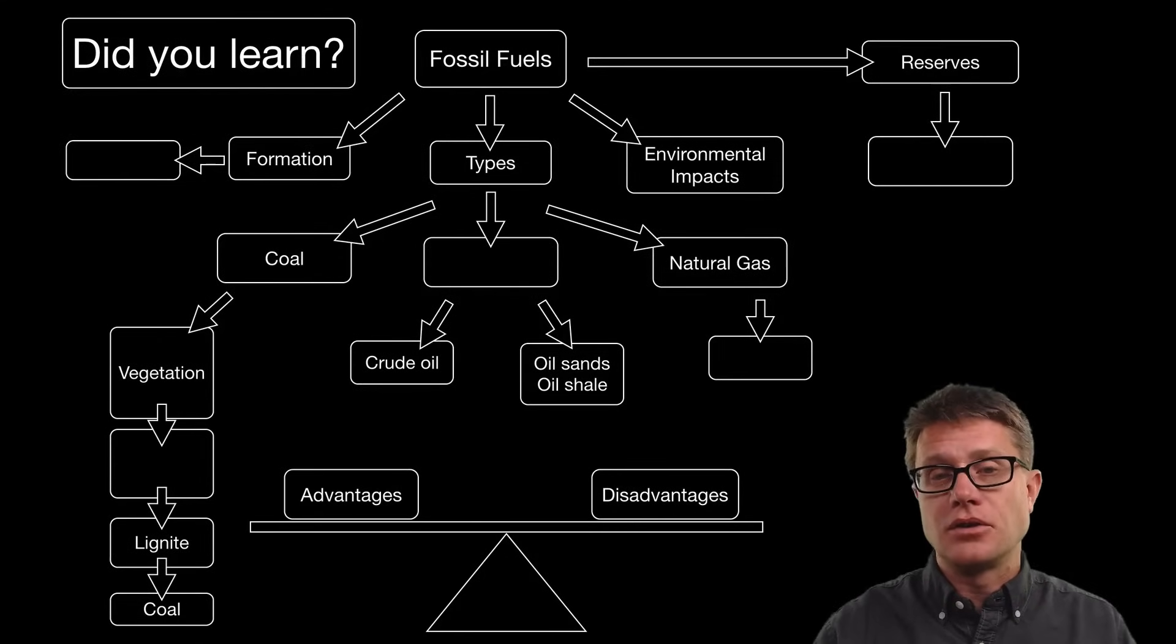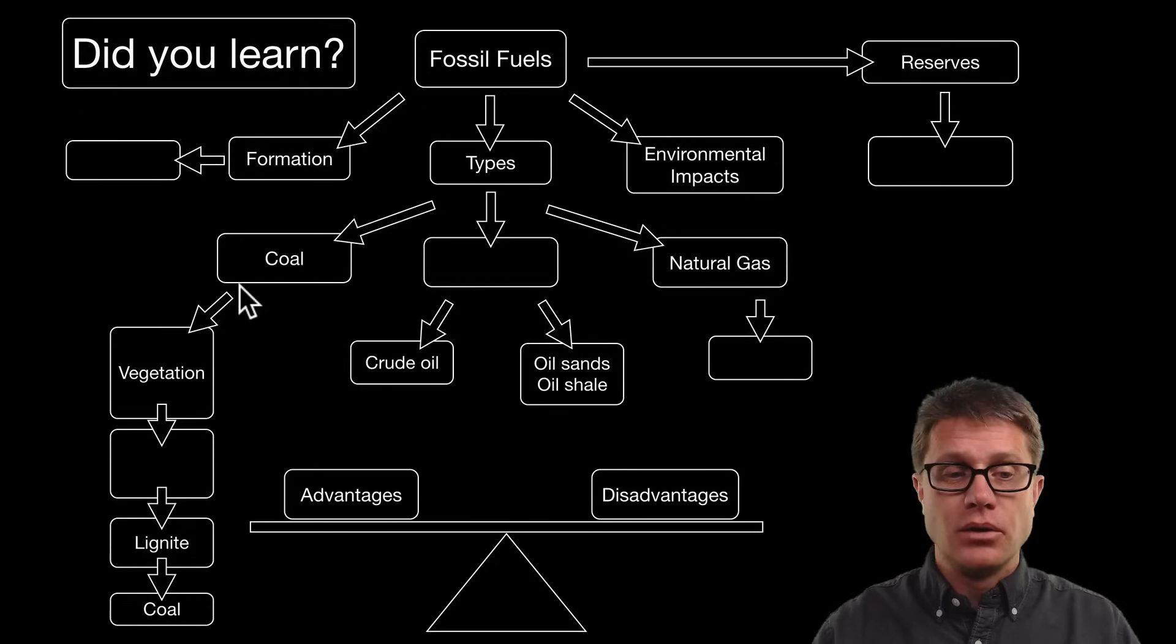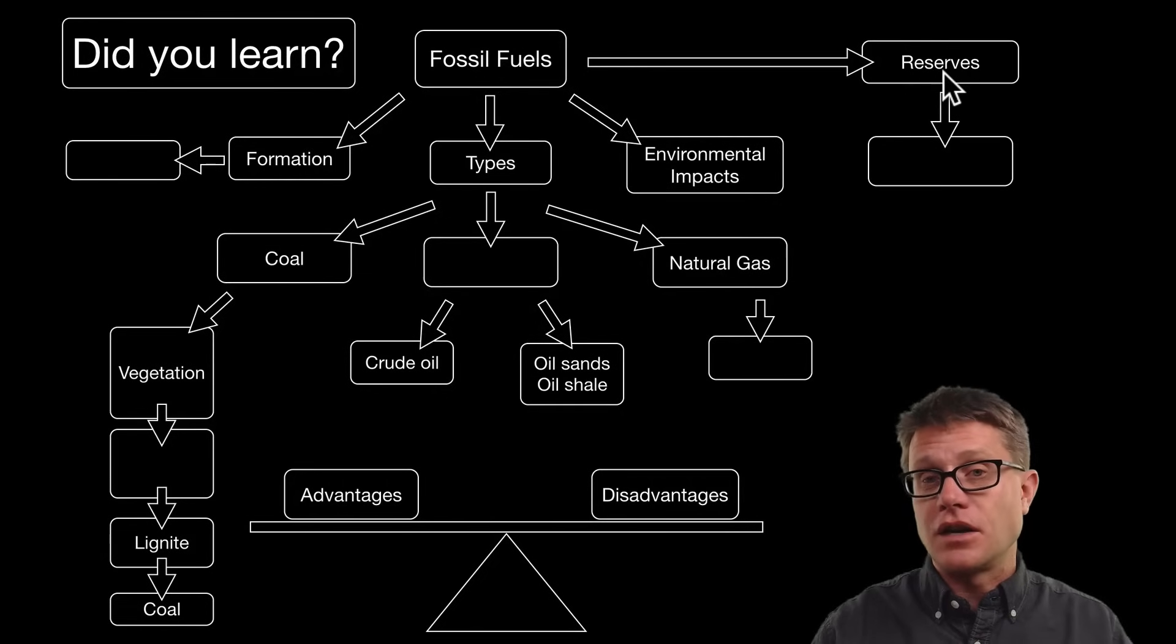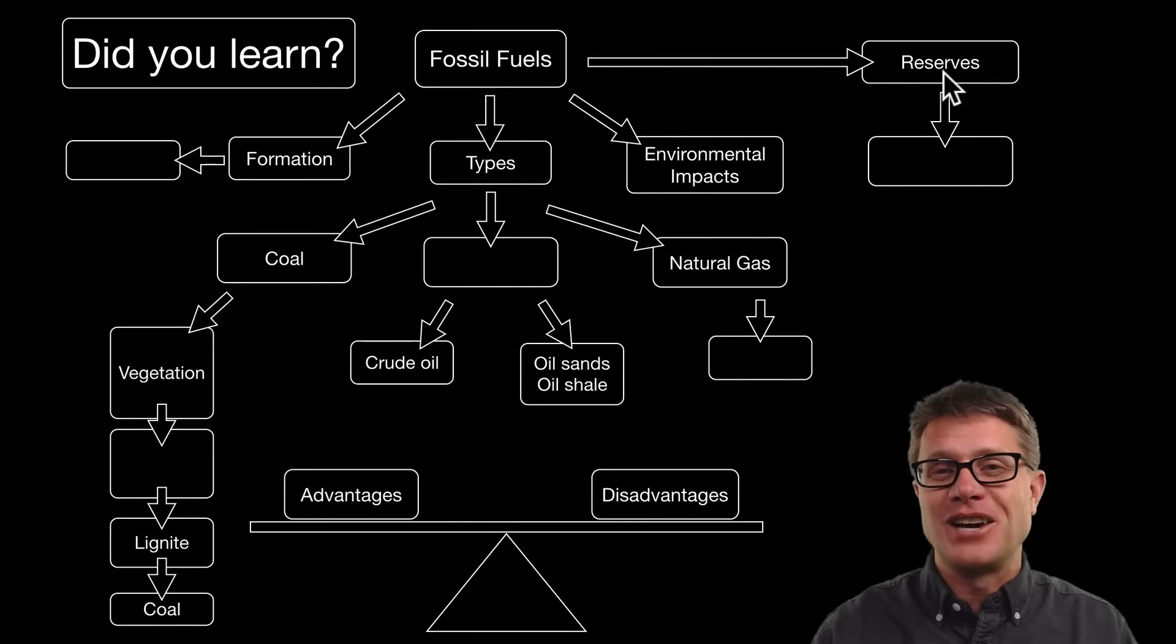And so did you learn the following? Could you pause the video at this point and fill in the blanks? I will do it for you. Fossil fuels are formed in an anaerobic environment. Coal is formed where we have vegetation squeezed to make peat, then lignite, then coal. Petroleum can come in the form of crude oil or oil sands and oil shales. If we are looking at natural gas, that is methane. There are advantages and disadvantages of each. The big ones are environmental impacts, especially carbon dioxide, and then the idea that they are non-renewable. We have reserves that are found on our planet but they are finite and we are going to run out of those. And we are going to have to move towards renewable resources. So I hope you learned all of that and I hope that was helpful.